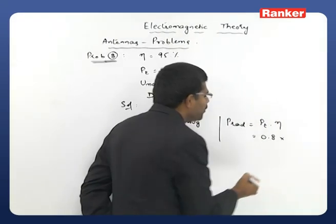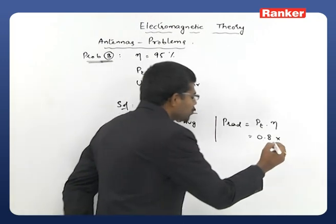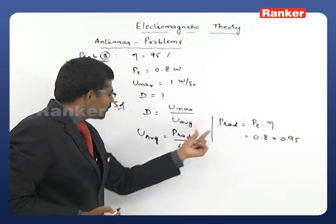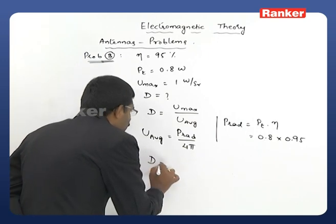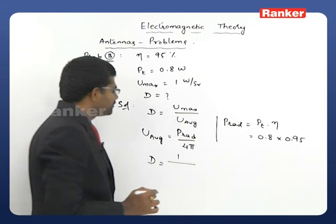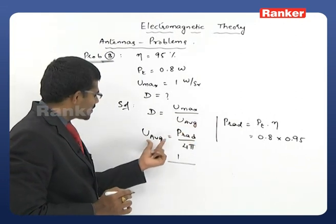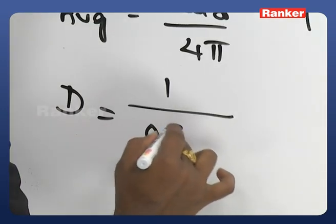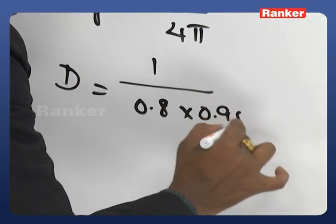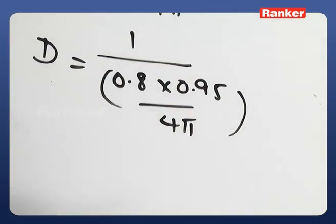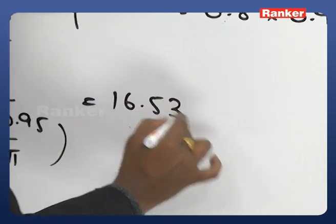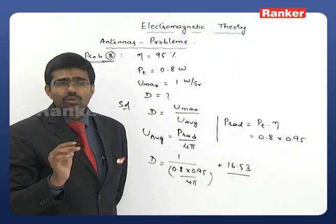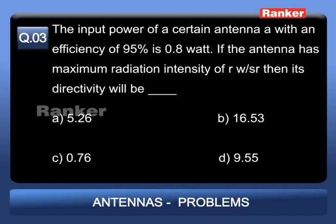Substituting: D = U_max / U_avg = 1 / (P_T × η / 4π) = 4π / (0.8 × 0.95). After simplification, D ≈ 16.53. This is not in decibels; it is the direct value. Option B, 16.53, is the correct answer.